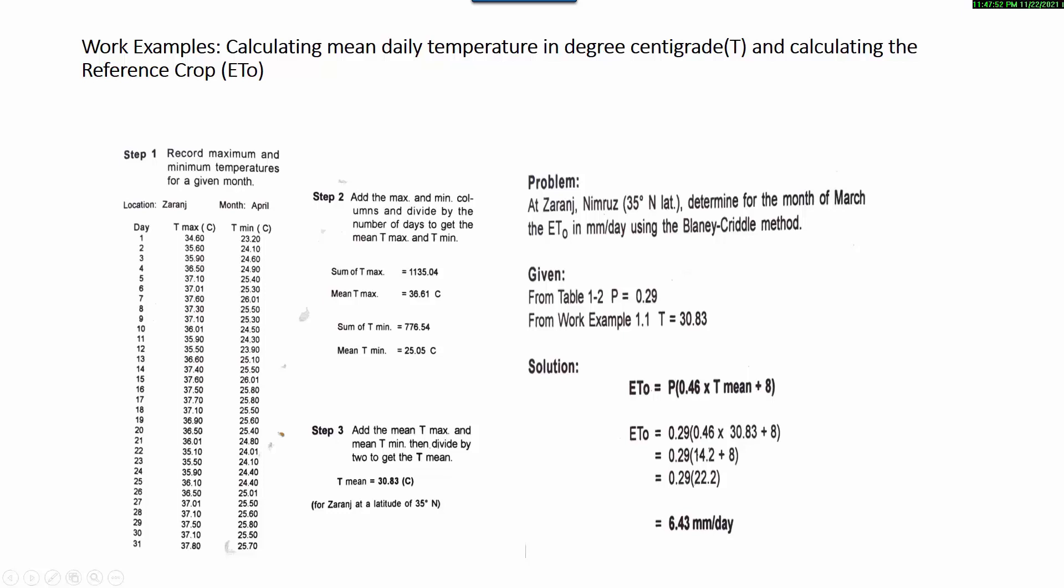In step three, we add the mean maximum temperature and mean minimum temperature (36.61 and 25.05) and divide by two to get the mean temperature for the month of April at location Zaranj, which is at northern latitude 35.